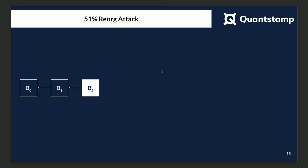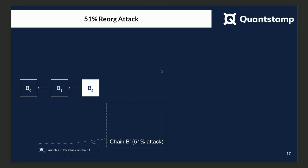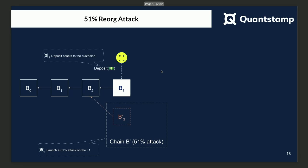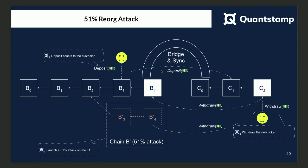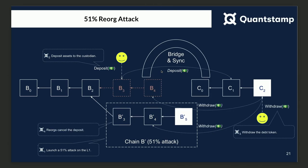So how would this work? Let's say we have a tip B2 and I'm running a 51% attack. I'm the attacker, and I make a deposit on the legitimate chain, then bridge my funds onto the other chain. Now, if I want to withdraw my funds, on the legitimate chain this is reflected on the block before. But I also reflect this on my 51% attack chain, where there was no deposit. So without any protection, I can steal funds from the bridge, as long as I can build more blocks and people can build on top of it.